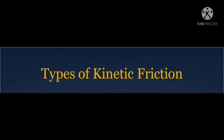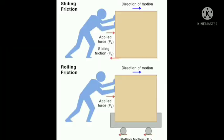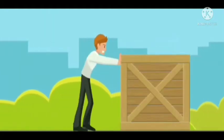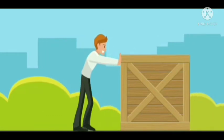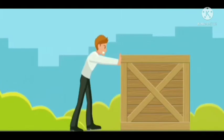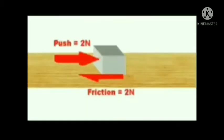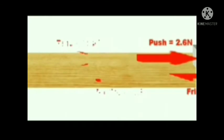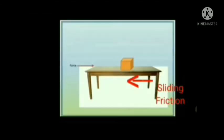The first type of kinetic friction is sliding friction — the opposing force that comes into play when one object is actually sliding over the surface of another object. For example, when a block of wood is moved on a flat surface and it slides, the opposing force is called sliding friction.